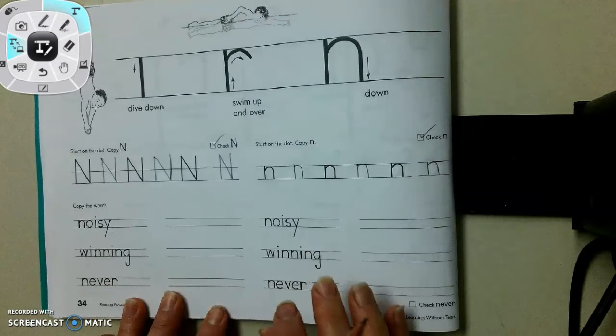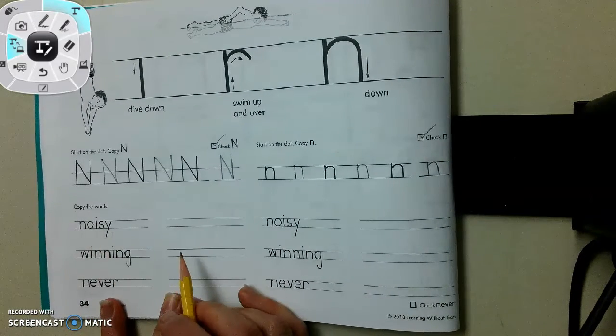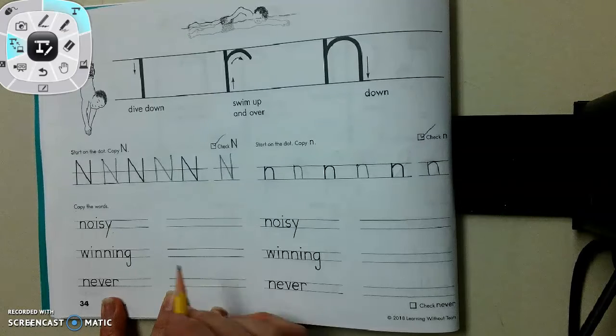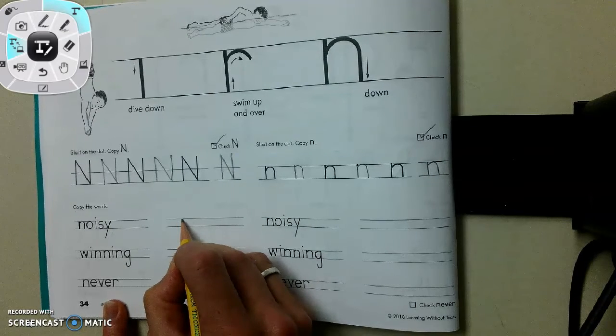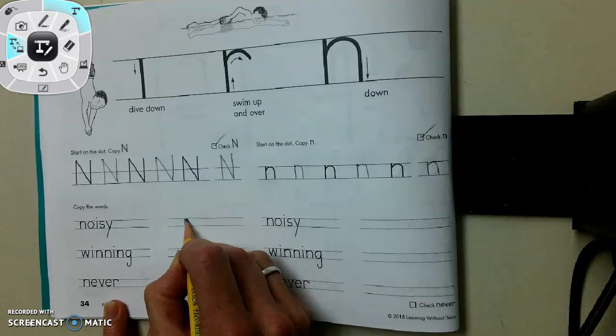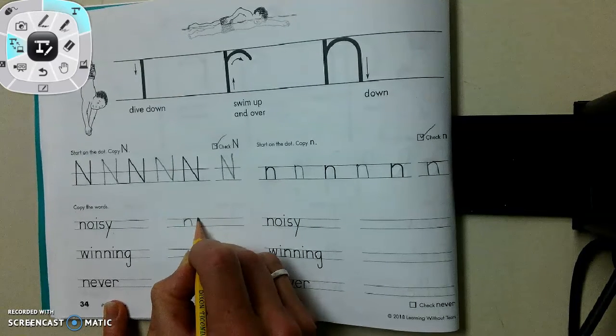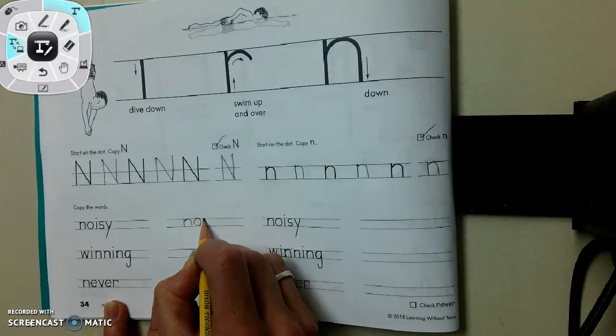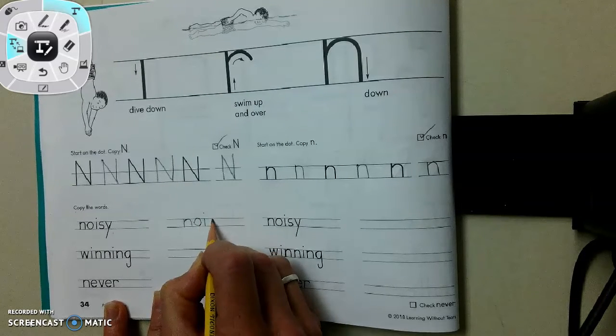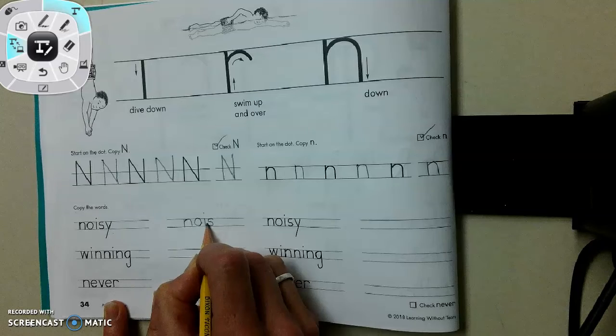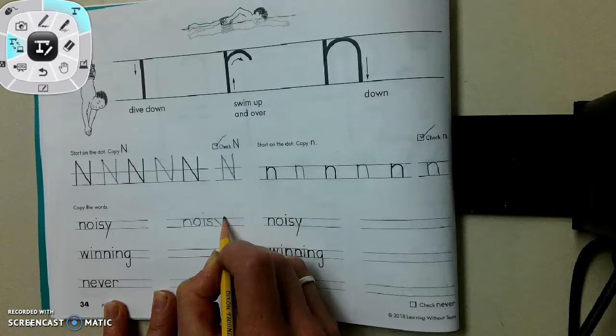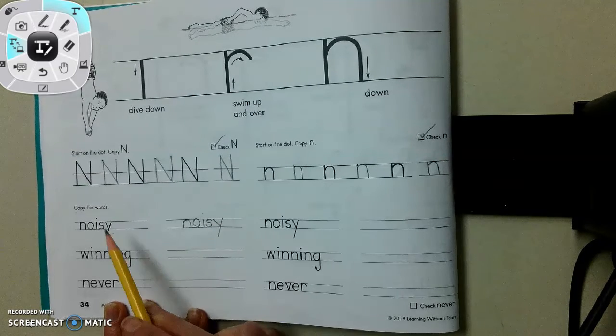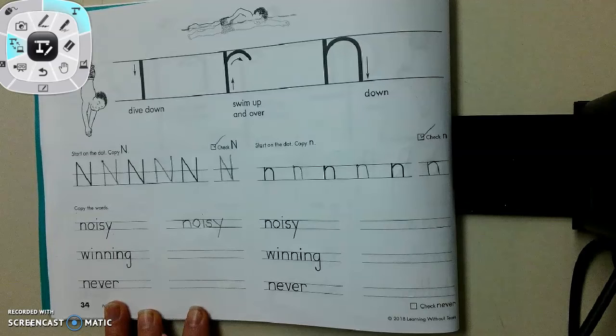Then we're going to copy the words. The first word is, can you say it? Did you say noisy? Not nosy, noisy. The first word is noisy. Notice how Mrs. Vowler is staying right inside those lines for the lowercase letters. You do the same. You want your handwriting to look just like the book, as much as possible.